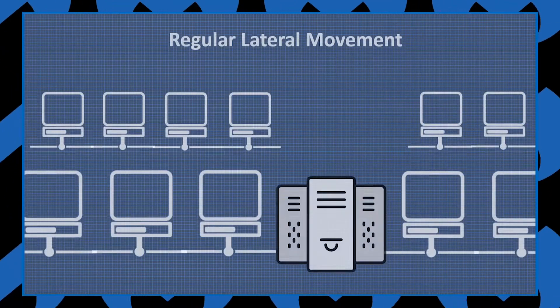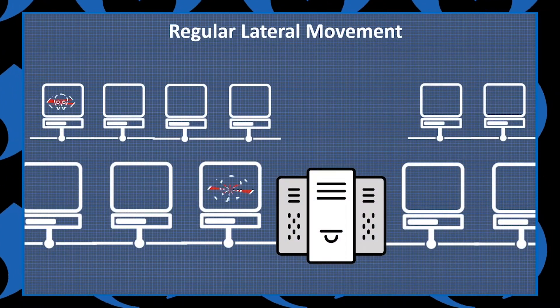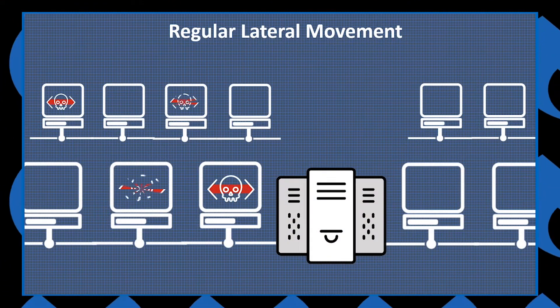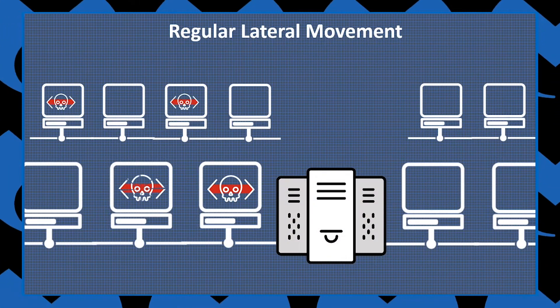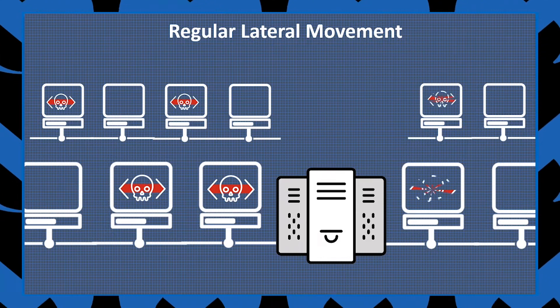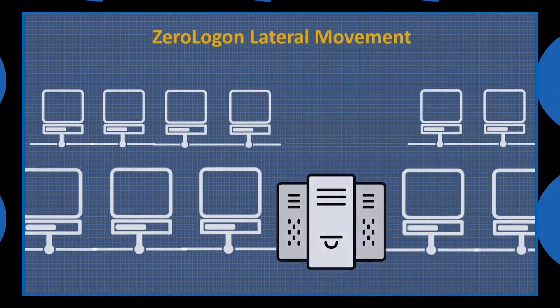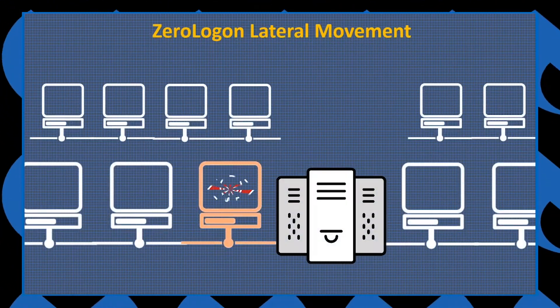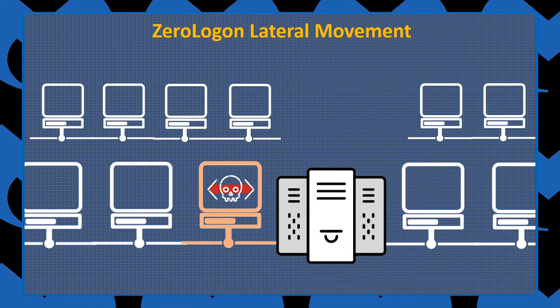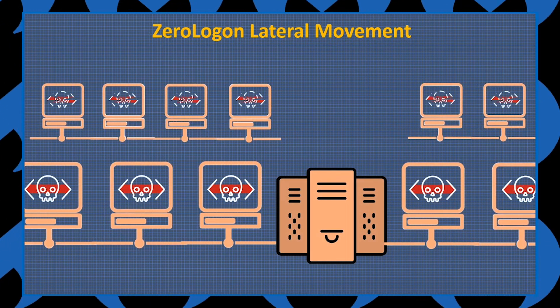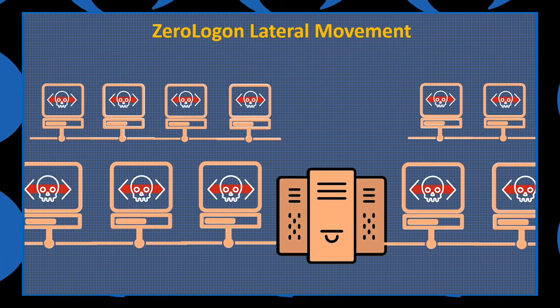Since today's attackers frequently attempt to spread laterally on an infected network in order to spread ransomware, being able to use this exploit would make their jobs much easier and allow them to go from initial infection to full network ransom in a short amount of time.